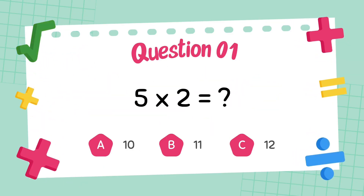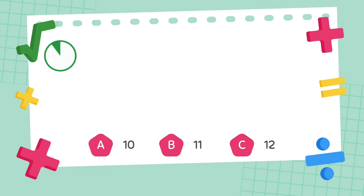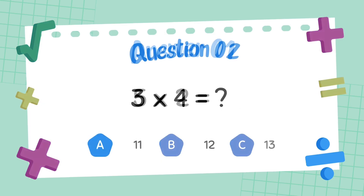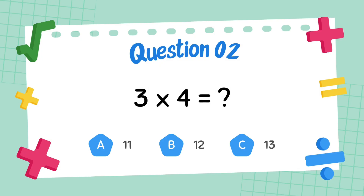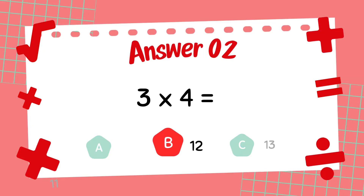What is 5 multiply 2? The answer is 10. What is 3 multiply 4? The answer is 12.